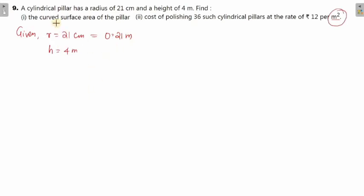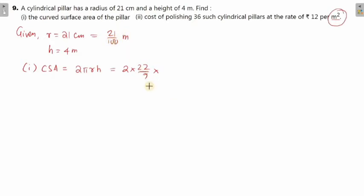Now for curved surface area: the formula is 2πrh. So we have 2 × (22/7) × (21/100) × 4. Simplifying: 7 cancels with 21 giving 3, and we get 2 × 22 × 3 × 4 divided by 100 = 5.28. So the curved surface area is 5.28 meter square.